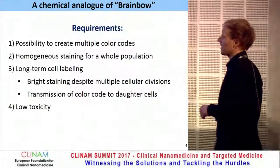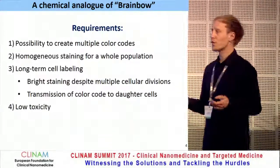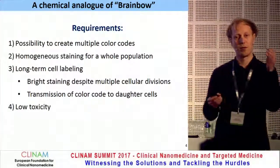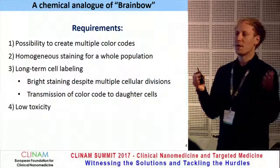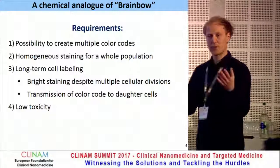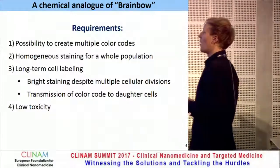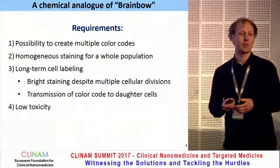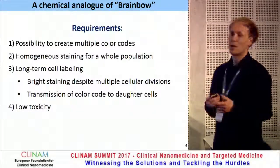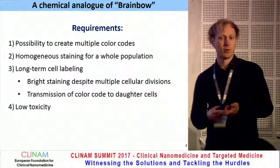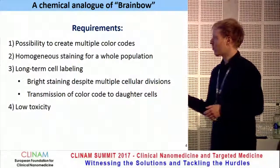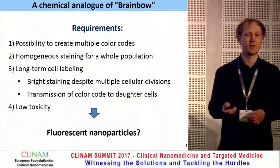What do we need for this chemical analog? We need the possibility to create color codes, and we should get relatively homogeneous staining — we're not interested in differentiating individual cells, but rather whole populations or types of cells. We need long-term cell labeling with bright staining due to cell divisions, faithful transmission of color codes to daughter cells, low toxicity — and so we were thinking about fluorescent nanoparticles.